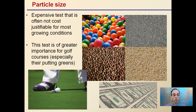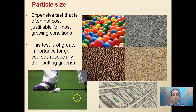Lastly, there's something called particle size. This is an expensive test and often not cost-justifiable for most growing conditions. It's basically an assessment of the particle size of your soil. This test is of greater importance for golf courses, especially putting greens, looking to maintain those nice even conditions. For most growers, I can't really recommend the added cost — we really can't modify for that. But just to give you some background, it is possible to get a particle size evaluation of your soil.